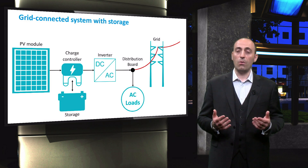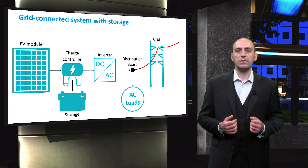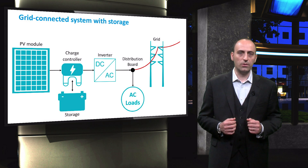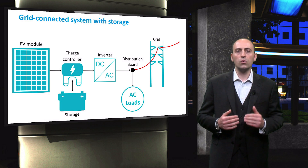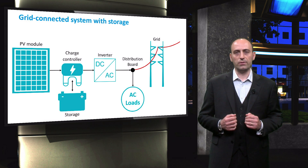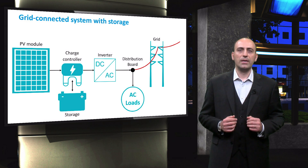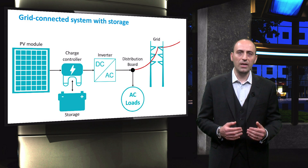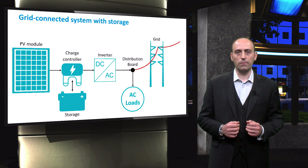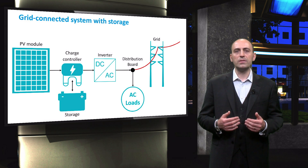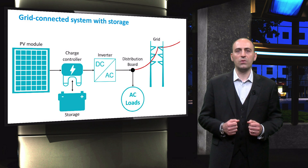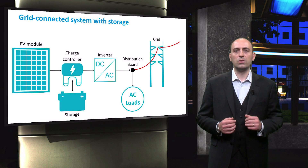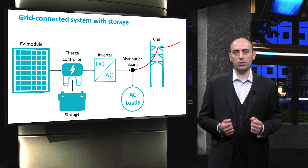Nowadays, more and more residential systems have the possibility to store energy, for example in batteries. As a consequence, a charge controller is also required. This layout is very similar to a standalone system, but it has higher reliability thanks to the connection with the grid. Moreover, batteries can be programmed to store electricity from the grid during the night when the price is lower, and then use it when the PV generation is insufficient.